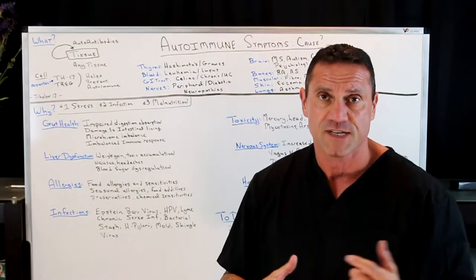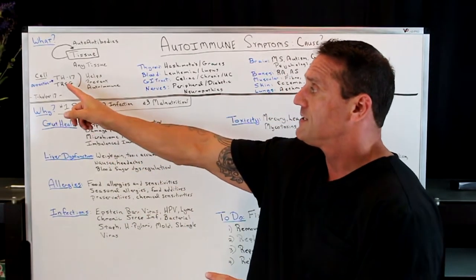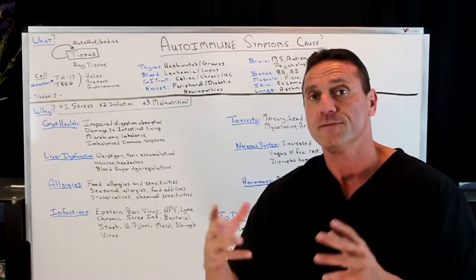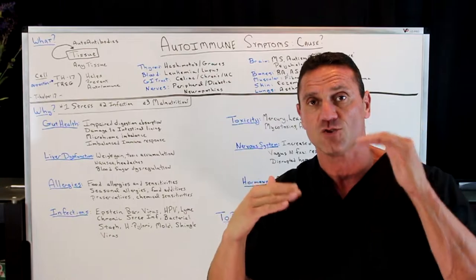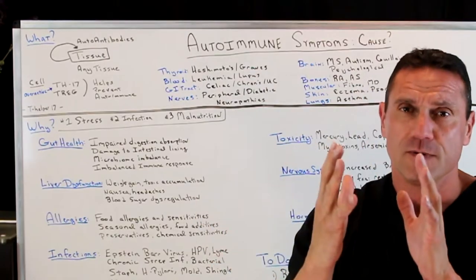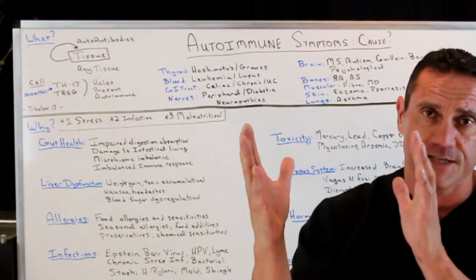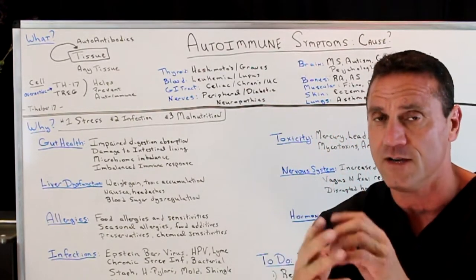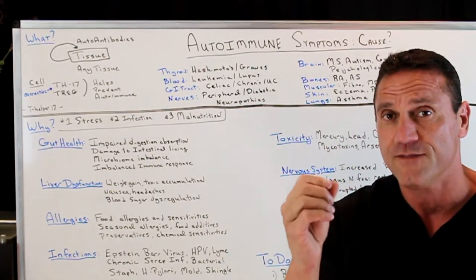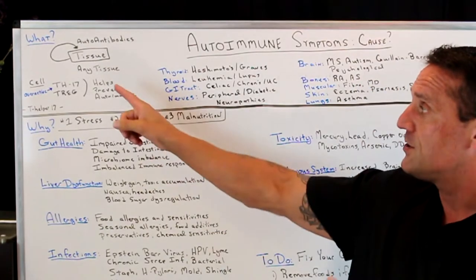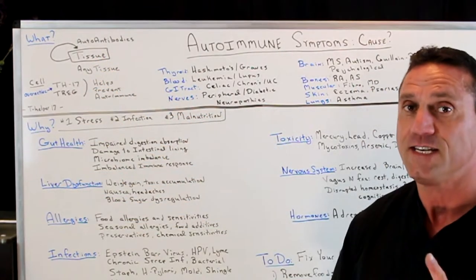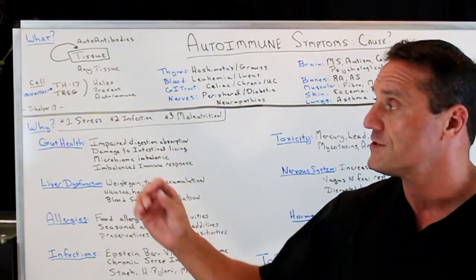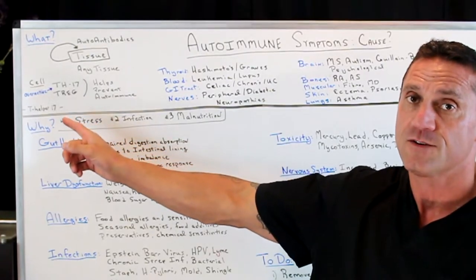Those are T helper cells — the T helper cell number 17. These two cells help prevent autoimmune disease. It's kind of like the regulatory switch. Is it too much? Let's turn it down. Let's turn it up. And when that flip switch is not working correctly, this is where you create auto-antibodies against any tissue. The two main cells you want to keep in mind are the TH17 and the T regulatory cells.